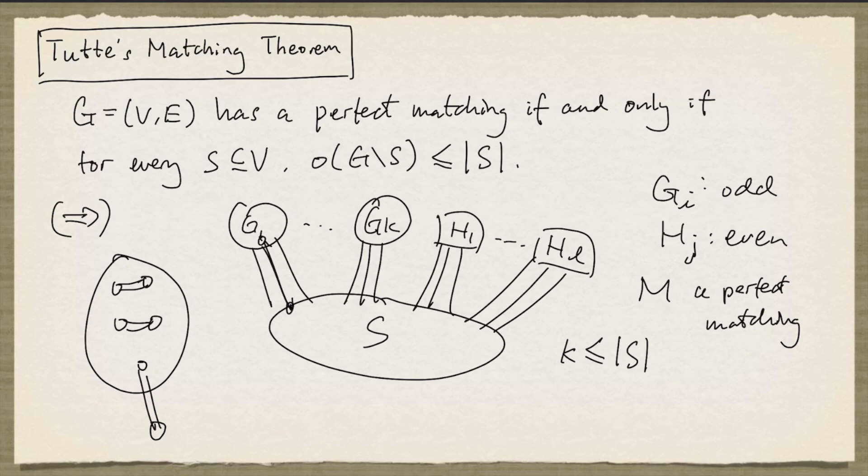Otherwise, some odd component would not be joined to a node in S. And so we have an M exposed node, contradicting that M is a perfect matching. So that proves this direction.